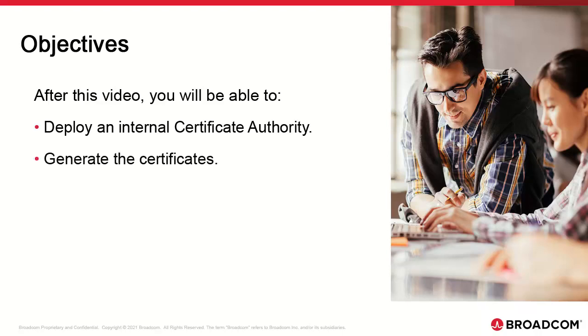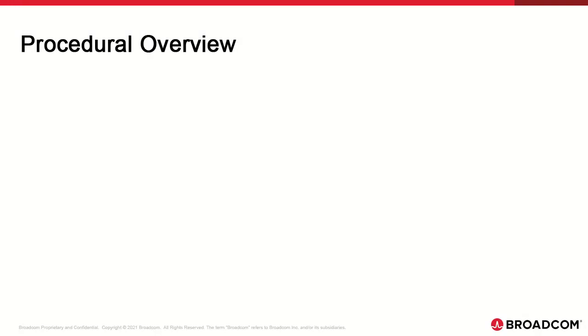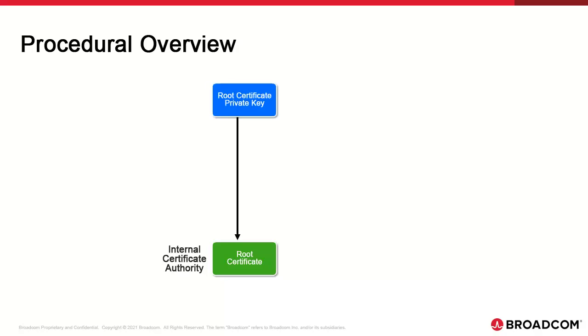Then we create the server certificate for AE, which gets signed by the CA. This is the procedure and we outline the OpenSSL commands next. First we generate the root certificate, which serves as the CA and signs the endpoint certificates. The root certificate needs a private key. Each time the root certificate signs a certificate, it needs a Certificate Signing Request or CSR.